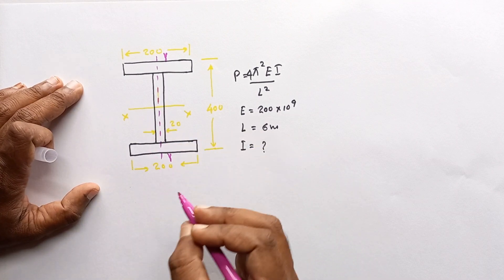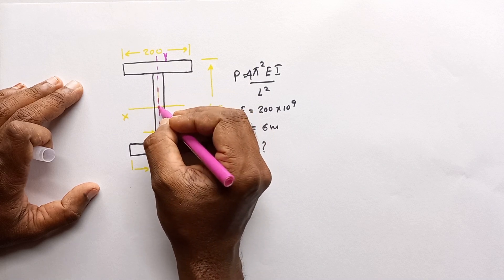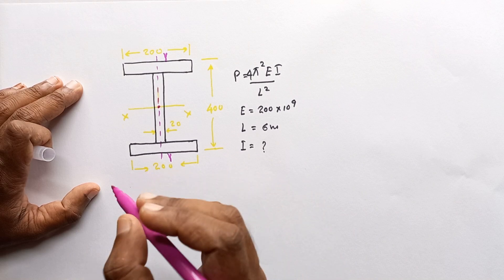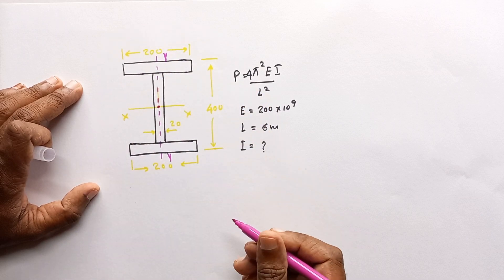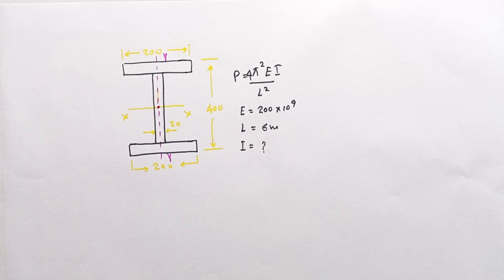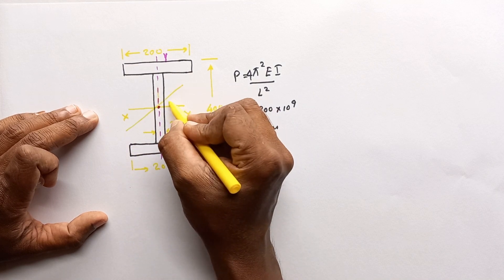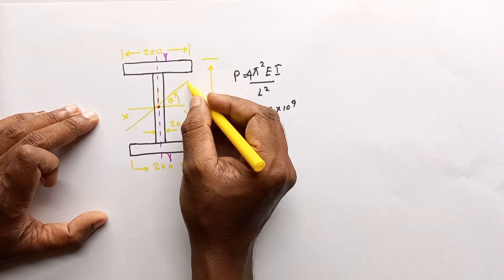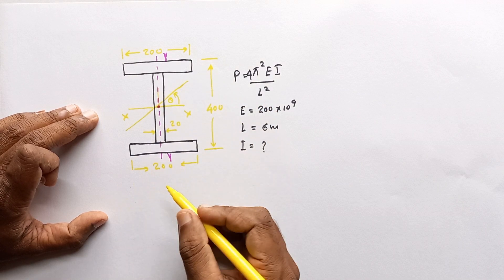Looking at the cross-section, it is symmetric around two axes. This is the area centroid. When using the Euler buckling load equation we assume the load acts through the area centroid of the cross-section. Through this centroid we can draw an infinite number of axes, and for each inclination angle theta we can calculate a corresponding I value — we need to determine which one to substitute.